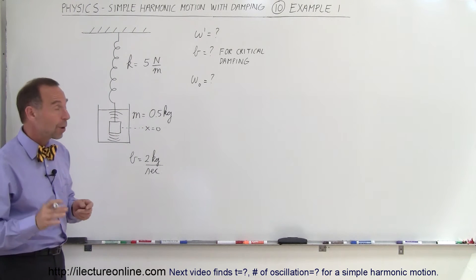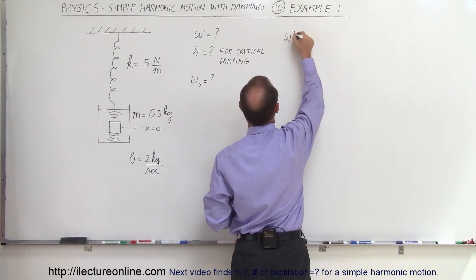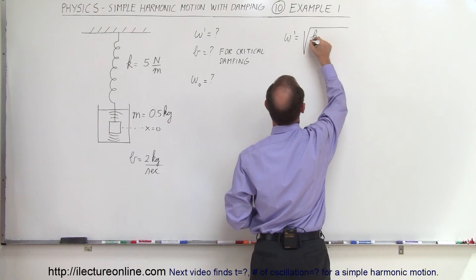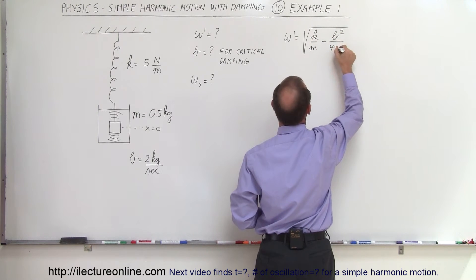Alright, so first of all we need the equation for the new frequency and the new frequency is going to be equal to the square root of k over m minus b squared over 4m squared.